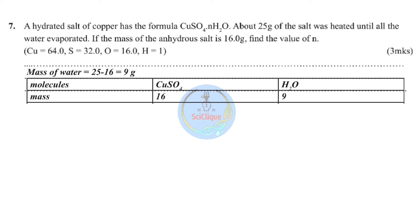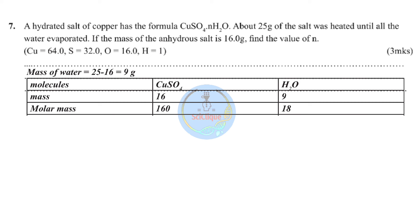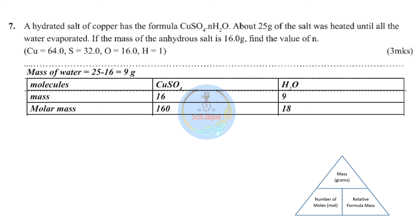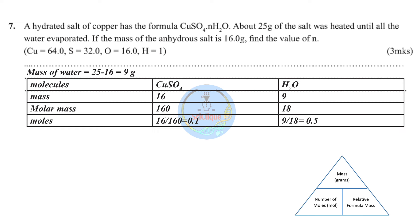Next, determine the molar mass by taking the relative atomic masses of the individual elements. For copper(II) sulfate: Cu = 64, S = 32, O = 16 × 4 — sum gives 160. For water: H₂O RMM = 18 (2 from hydrogen, 16 from oxygen). Number of moles: 16 ÷ 160 = 0.1 moles of CuSO₄; 9 ÷ 18 = 0.5 moles of water.